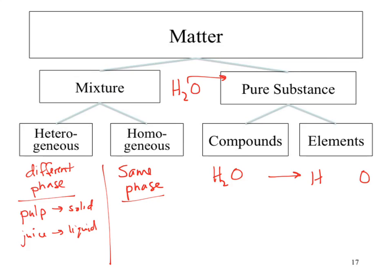If we move to a homogeneous phase, they are completely and evenly mixed and they don't settle out. An example is salt water. Salt water is taking sodium chloride and adding it to H2O. What phase is sodium chloride? Solid. What phase is water? Liquid. How is this a homogeneous mixture? Because it's water-soluble. There's another phase - in addition to solid, liquid, and gas, the new phase is aqueous. What does aqueous mean? Dissolved in water.